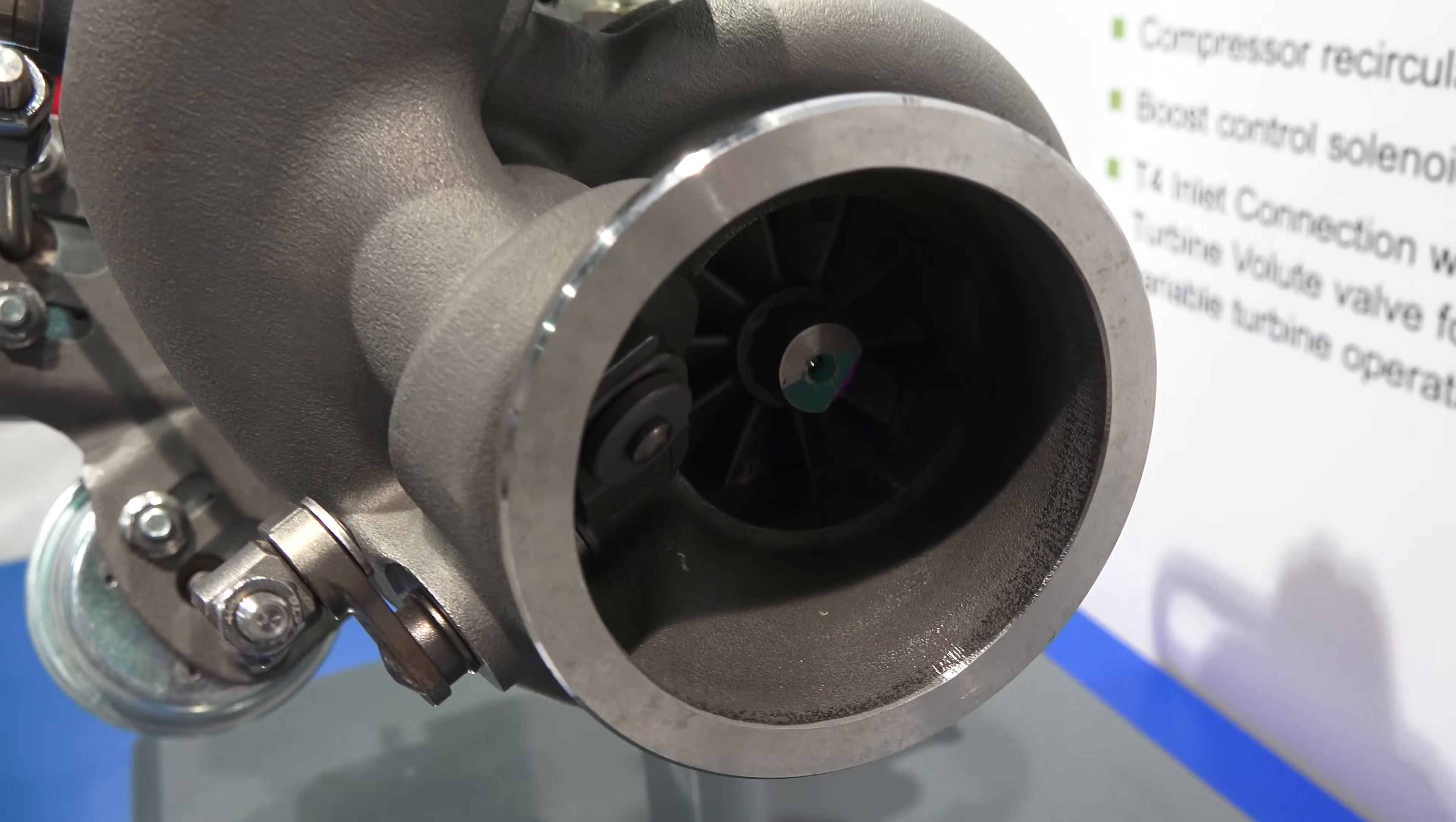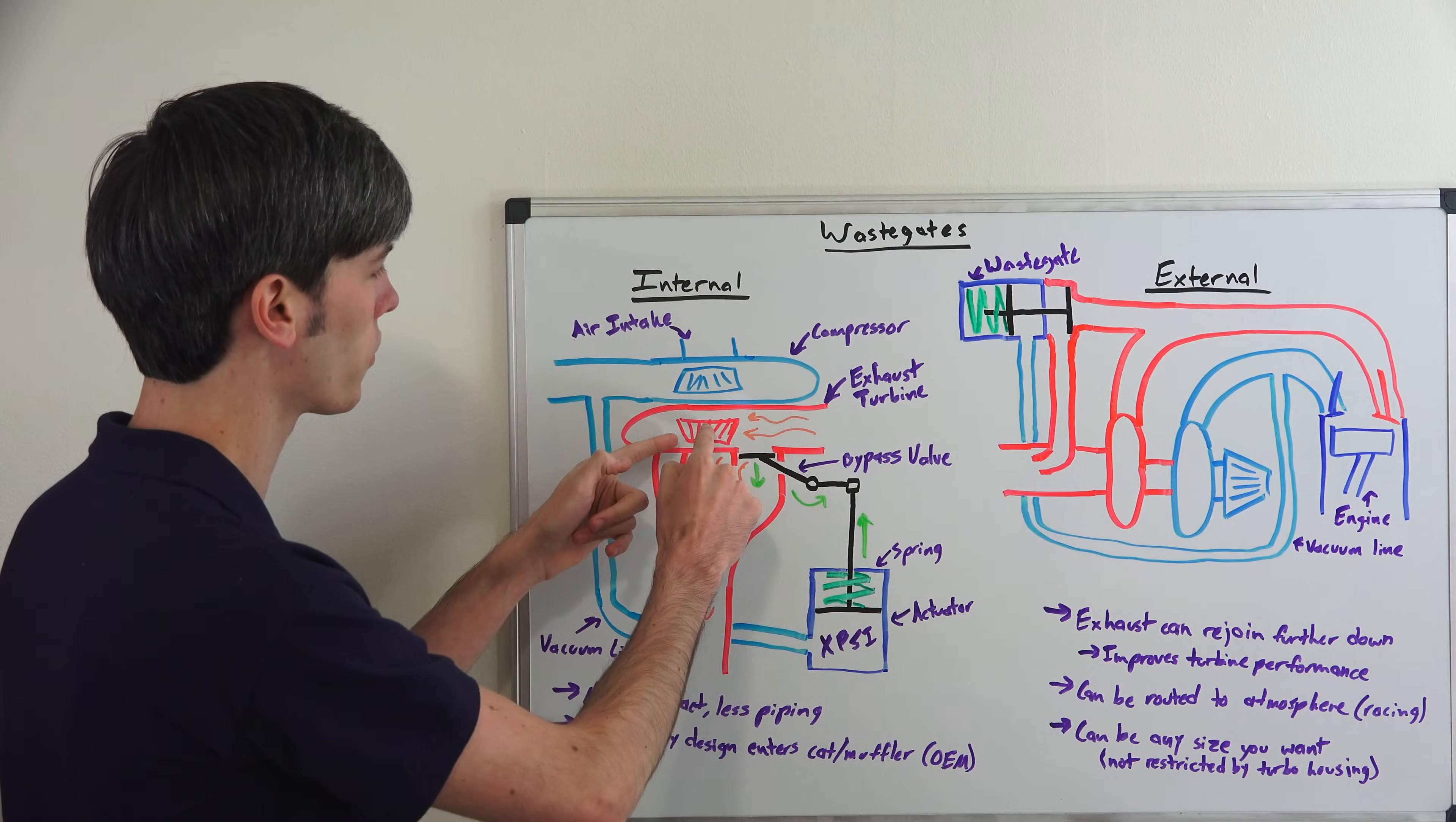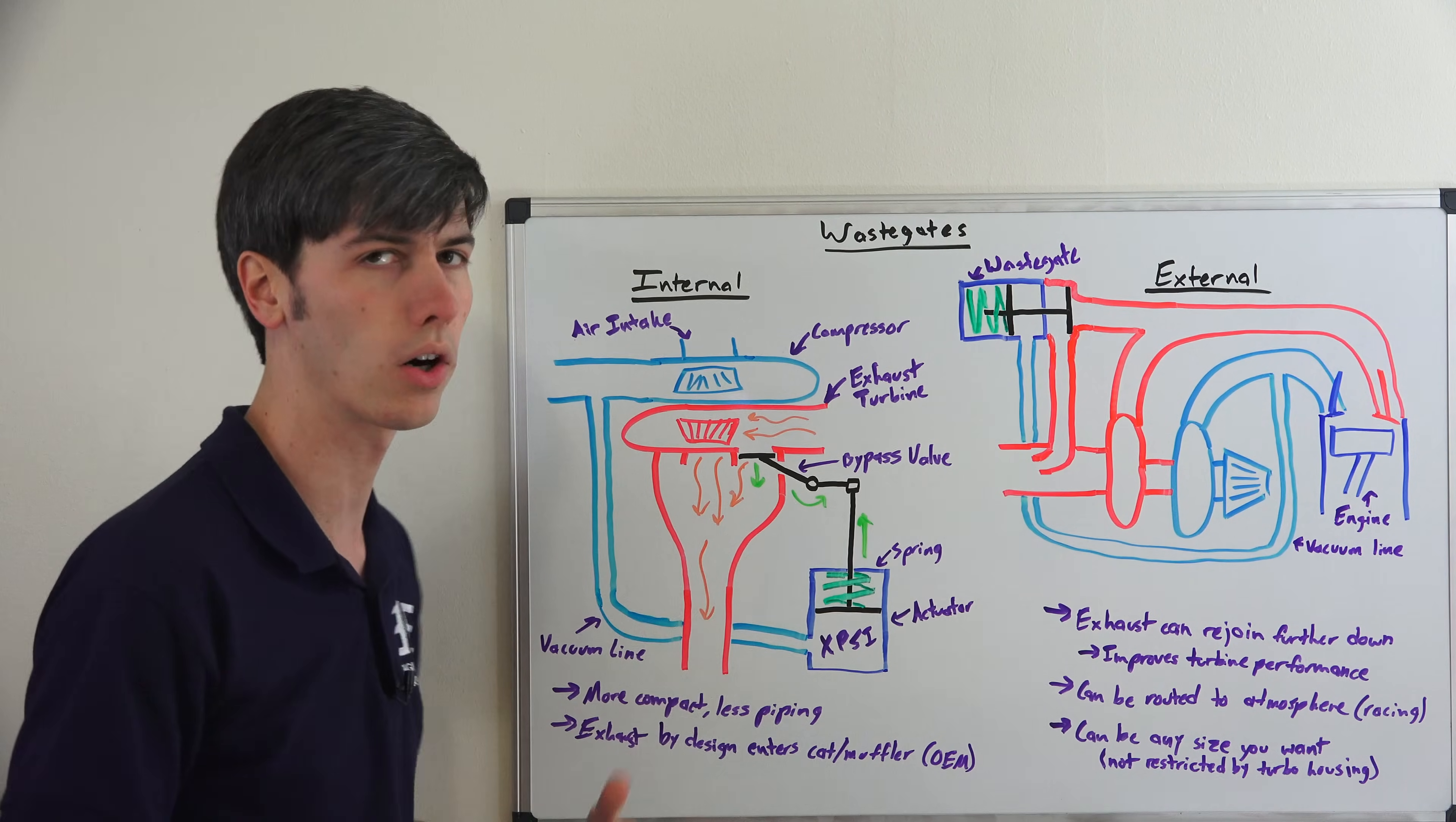So here we have an internal example and we're going to start with this. We have our exhaust portion here, the exhaust turbine, and then we have the inlet portion here with the compressor wheel. Your air is going to be coming in here creating boost for your car to make more power.